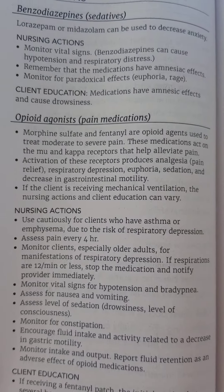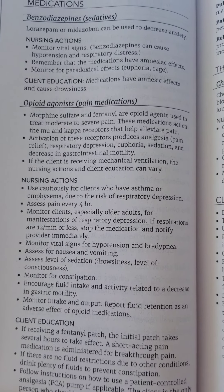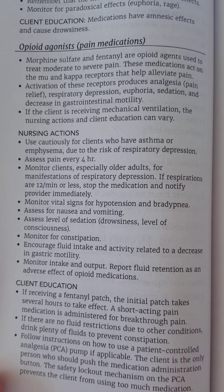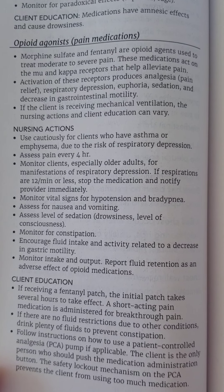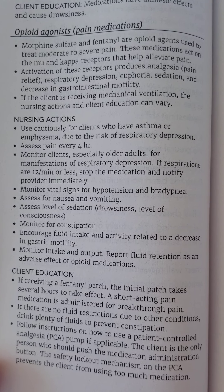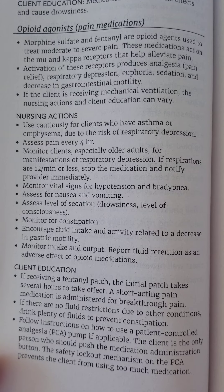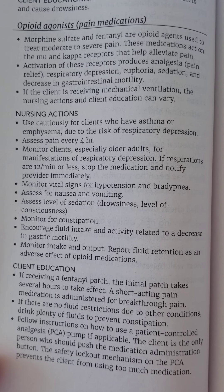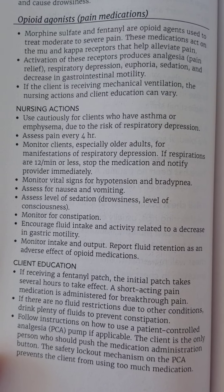For opioid agonists, these are pain medications. This would include morphine sulfate and fentanyl, which are opioid agents used to treat moderate to severe pain. These medications act on the mu and kappa receptors that help alleviate pain, producing an analgesic pain relief effect.